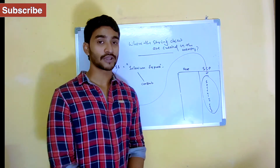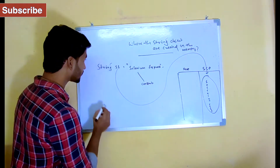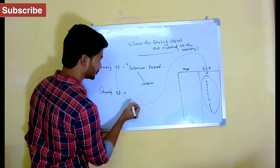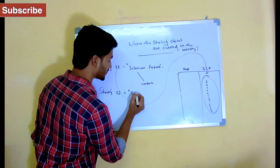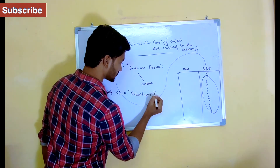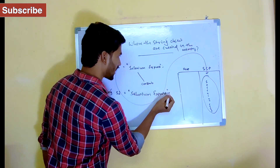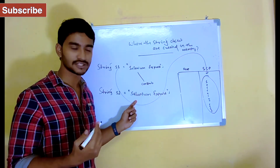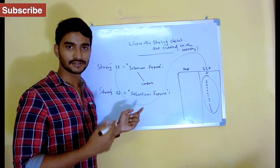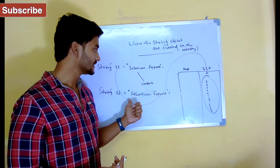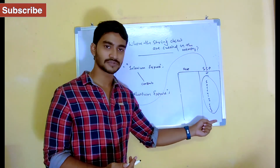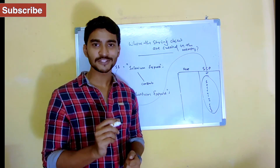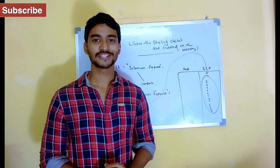Whenever I create a string object using double quotes, the object gets created inside the string constant pool, and S1 points to that object. But what if I create another object — say S2 — with the same content 'Selenium Express'? Is JVM going to create another object in the string constant pool, or will it point to the existing one? The answer will be covered in the next tutorial.